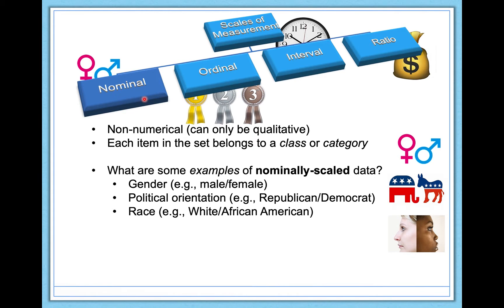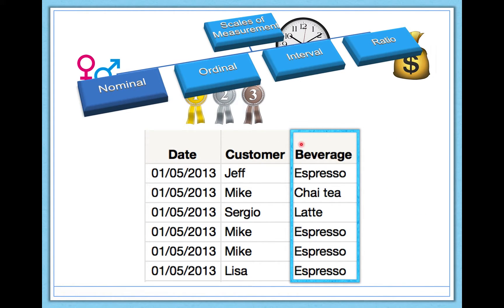We've seen an example of a nominal scale variable when we were learning to calculate the mode in our measures of central tendency video. Here we're looking at different beverage orders: espressos, latte, chai tea, and so on. These variables are non-numerical, they belong to different categories, and so they're a great example of nominal scale data.